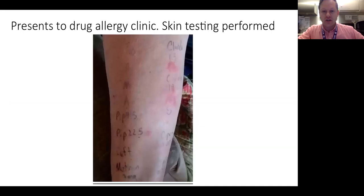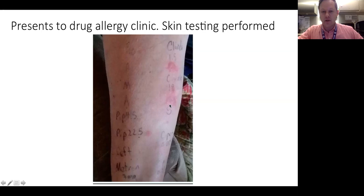So we did skin testing for him. He lives far away and only had a flip phone, so after that we started asking our patients if they have something other than a flip phone. We did testing to penicillins, Zosyn, Ceftriaxone, Motrin, Ciprofloxacin, and Flagyl. What you can see here is that clindamycin at about 24 hours had a blistering vesicular rash at both concentrations we use, which is consistent with a T-cell mediated reaction to clindamycin. So the final diagnosis is AGEP secondary to clindamycin.